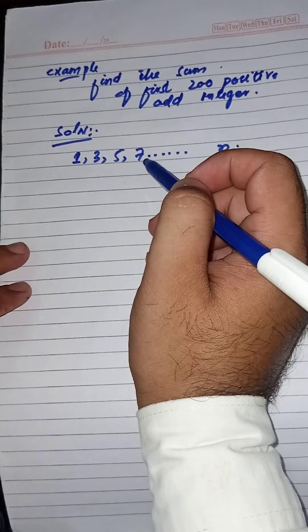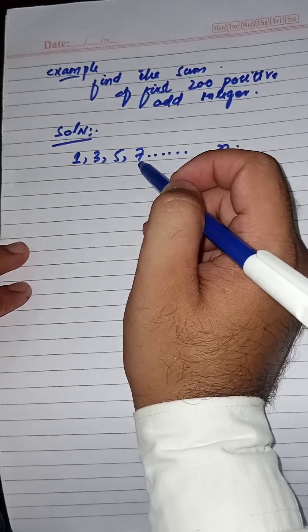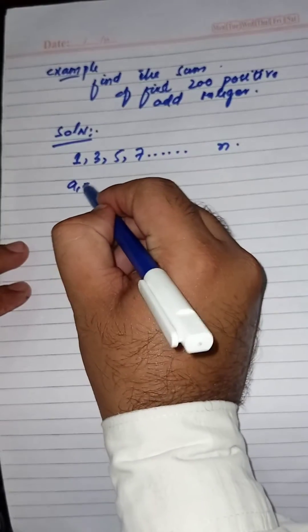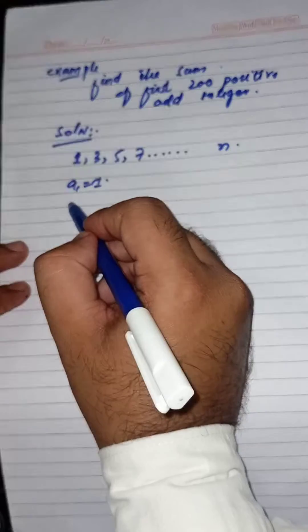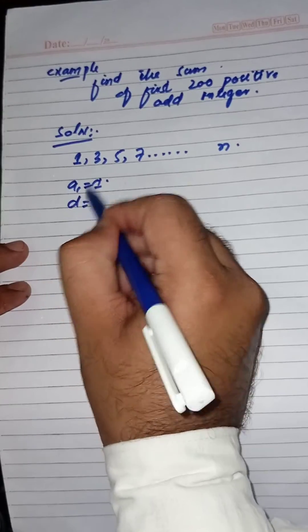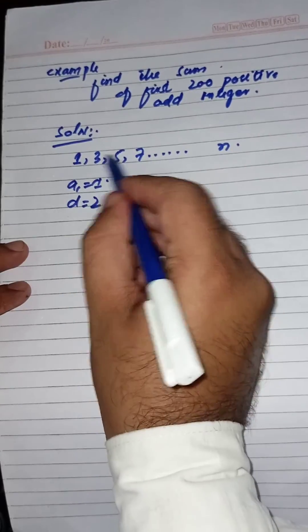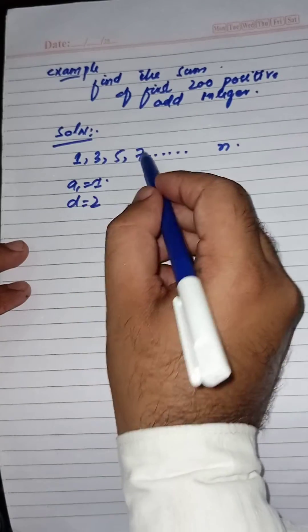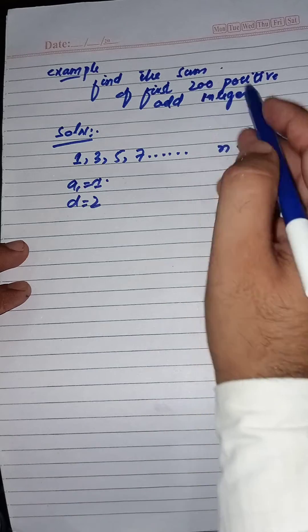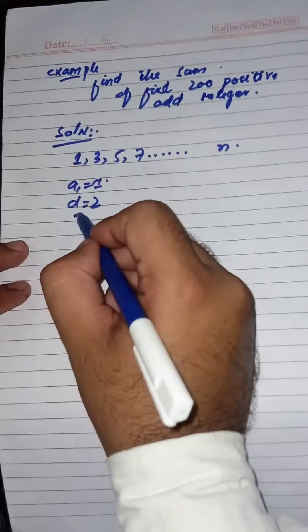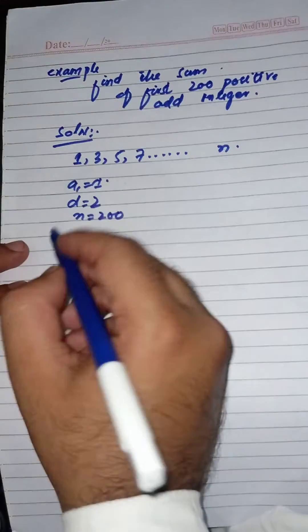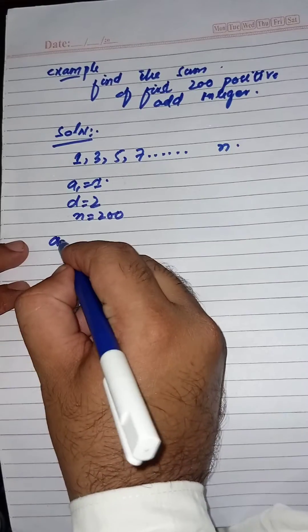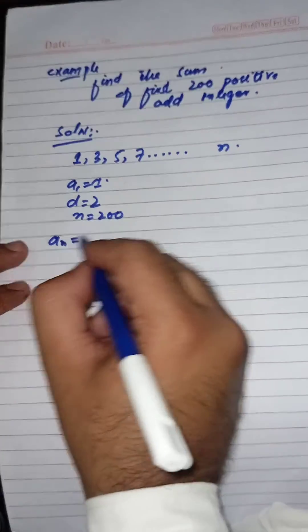I have to find the nth term first. So a1 is equal to 1, and d is equal to 3 minus 1 = 2, 5 minus 3 = 2, 7 minus 5 = 2. And n is equal to 200.